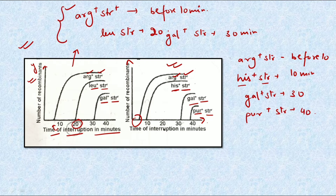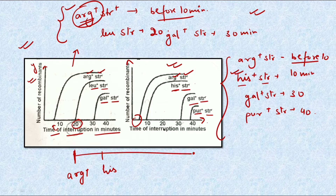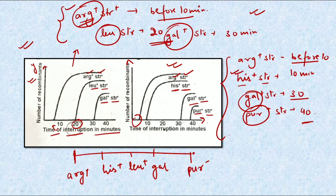Analyzing the information from both graphs and plotting the order according to time: the common gene arg appears before 10 minutes in both graphs, so it comes first. At 10 minutes we have histidine, at 20 minutes we have leucine, at 30 minutes we have gal — present in both graphs — and finally at 40 minutes we have pur+.